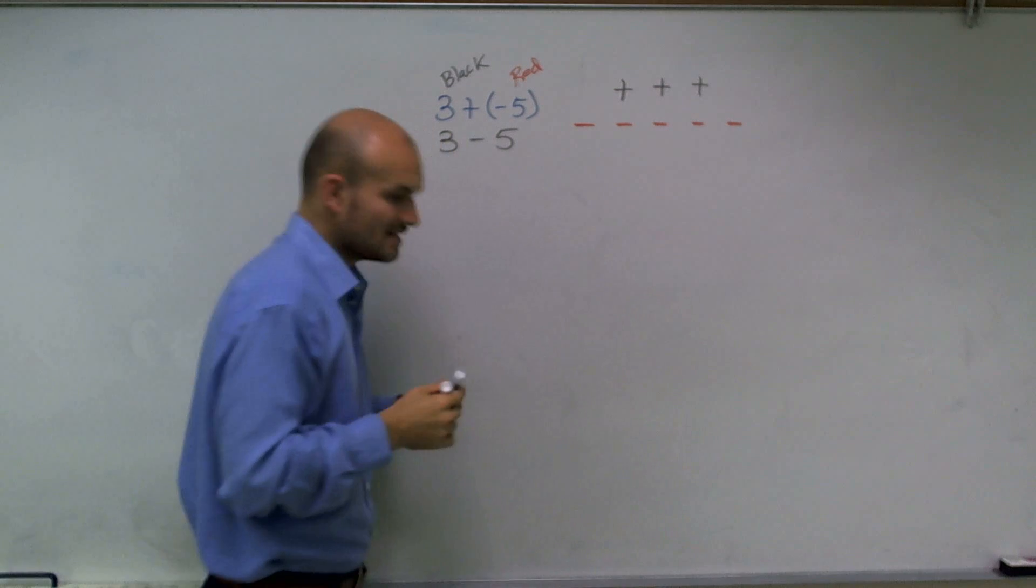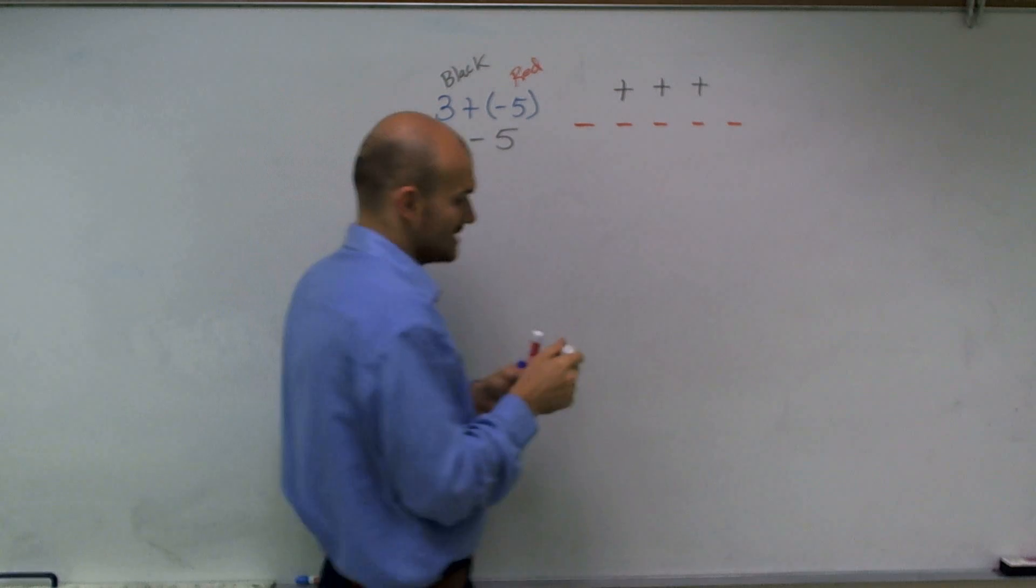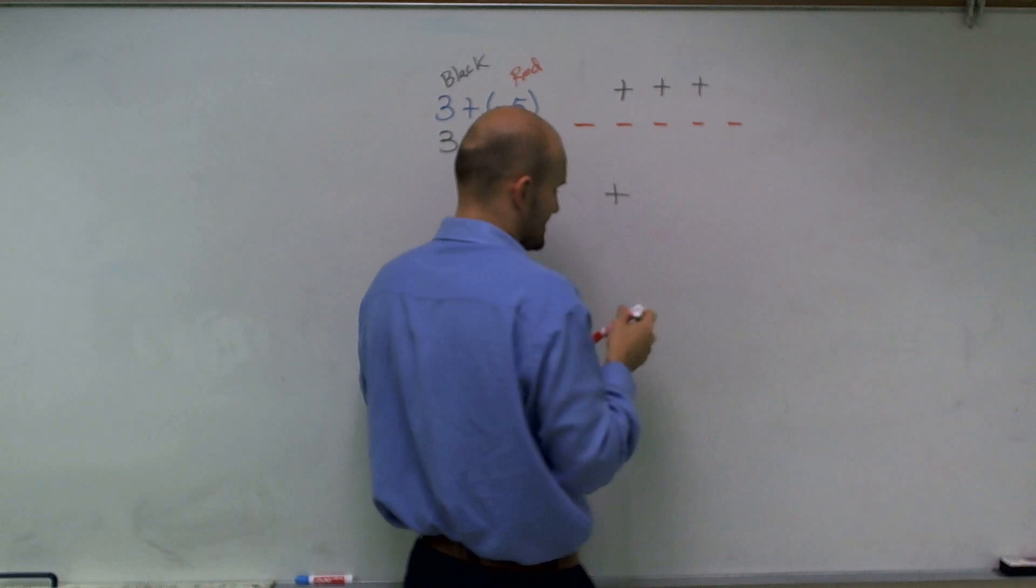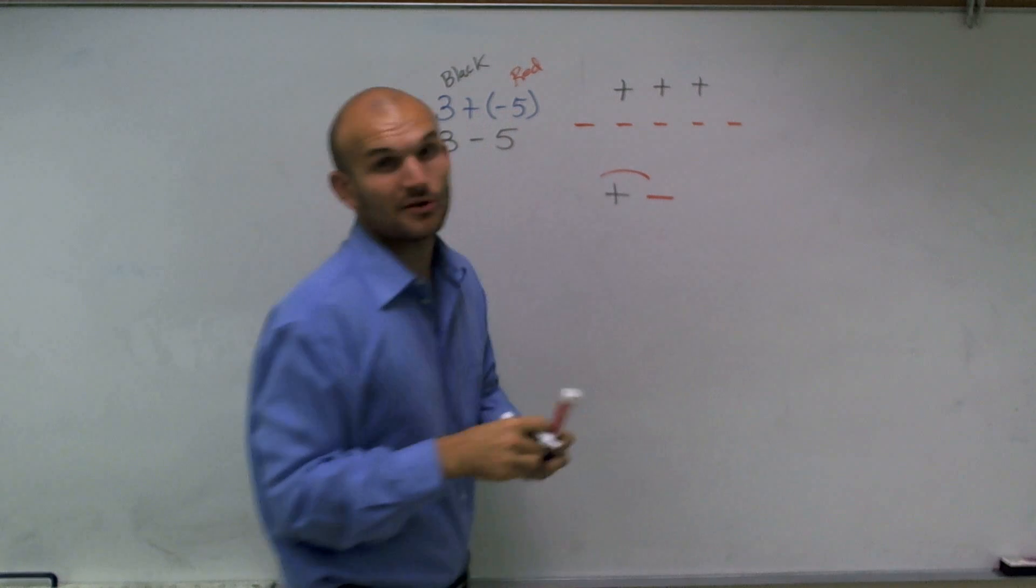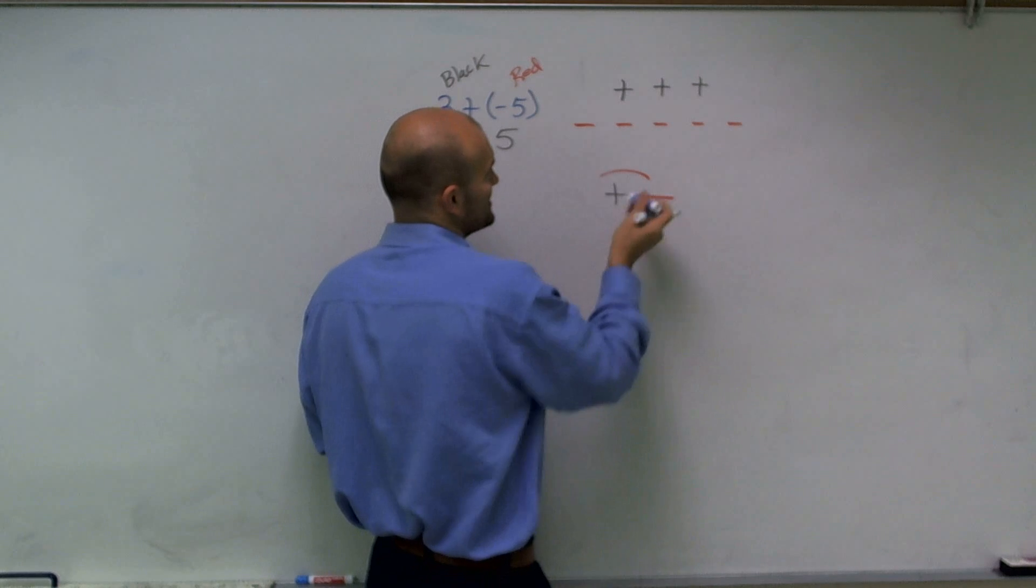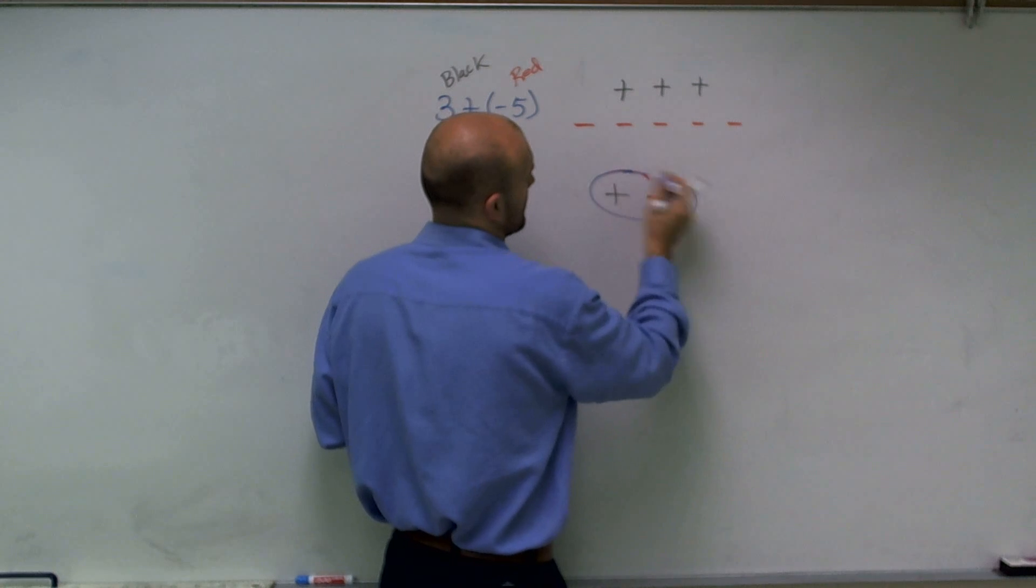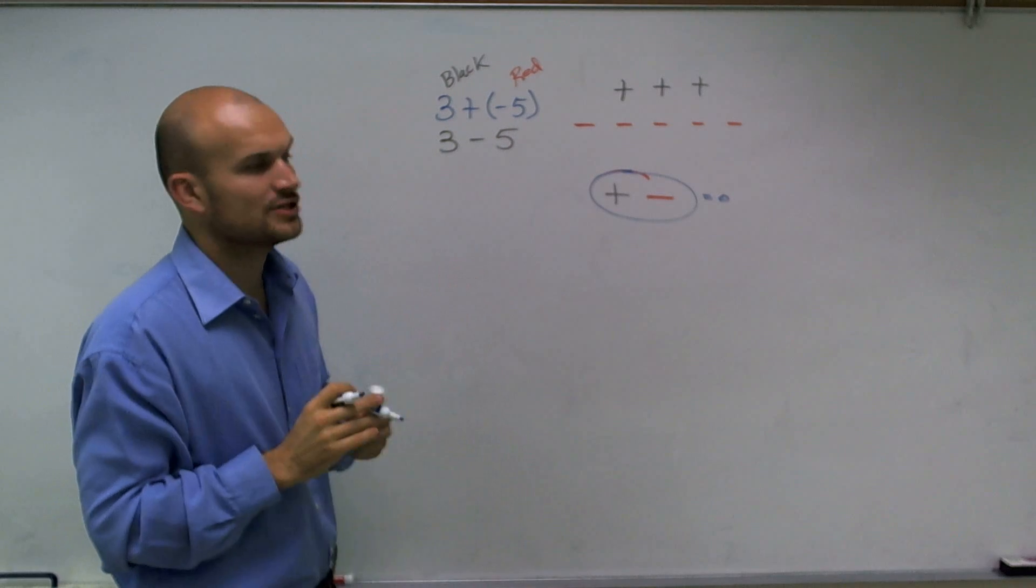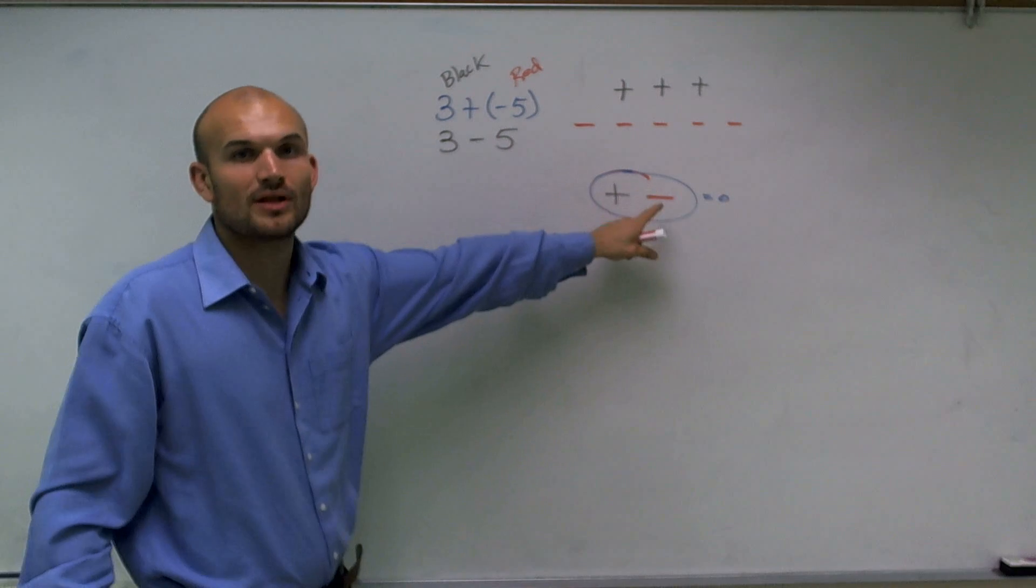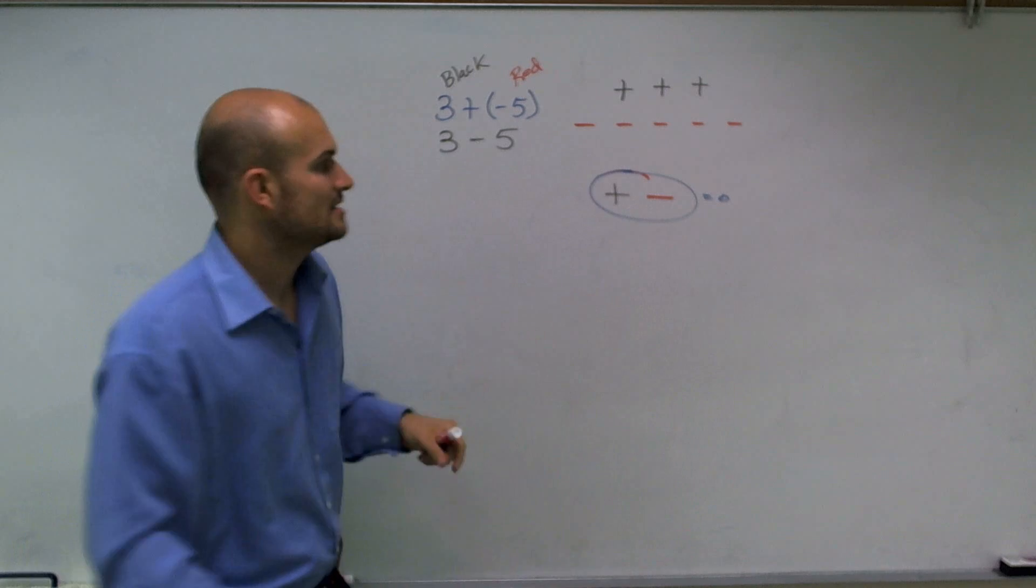Then the next thing for you to understand is that a plus and a negative, I'll use blue here now, cancel each other out to equal 0. So what I'm going to do is match up a plus and a negative, a black and a red, equals 0.